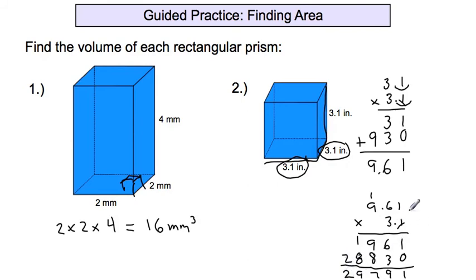Now, where does the decimal go? One, two spaces in there, and three spaces in the factors. So it goes one, two, three spaces in, and 29.791 is the answer there.